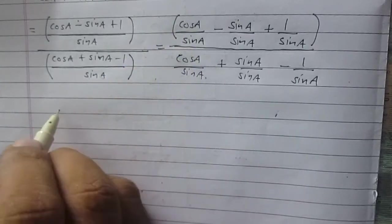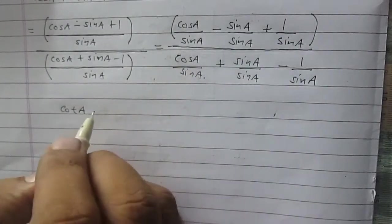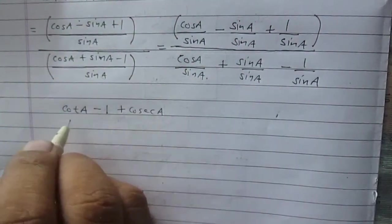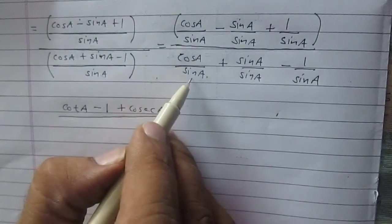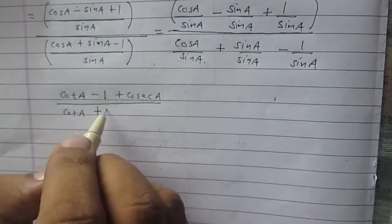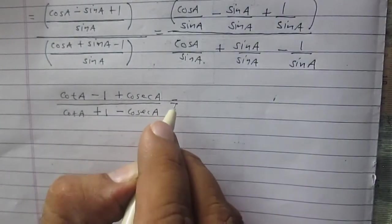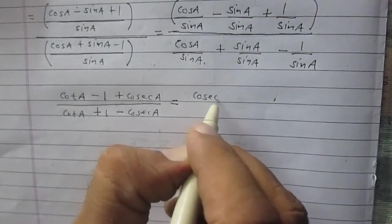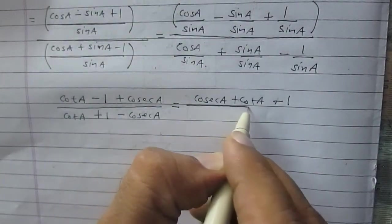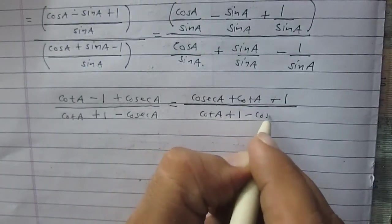Simplifying each term: cosA/sinA is cotA, sinA/sinA is 1, and 1/sinA is cosecA. So the numerator becomes cotA minus 1 plus cosecA, which I am rearranging as cotA plus cosecA minus 1. The denominator is cotA plus 1 minus cosecA.